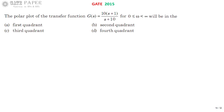We are discussing the GATE 2015 ECE paper. The polar plot of the transfer function G(s) = 10(s+1)/(s+10) for ω from 0 to infinity — in which quadrant will it be present: first, second, third, or fourth? The polar plot is related to frequency, so we replace s with jω.